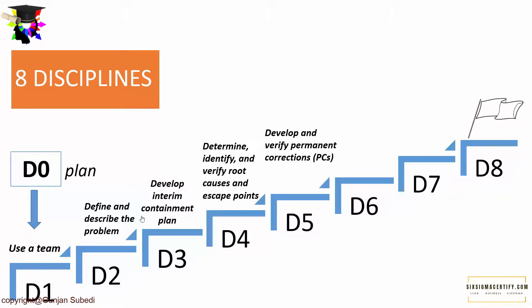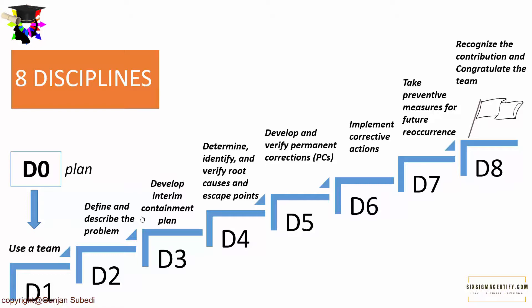In D5, we develop and verify the permanent corrections by selecting the most effective methods for solving the root causes. In D6, we implement the best corrective actions. In D7, we take preventive measures against future re-occurrence by re-modifying management systems, operations systems, practices, and procedures. In D8, we recognize the contributions and congratulate the team — an important part of 8D that fosters a culture of recognizing employee hard work in the organization.